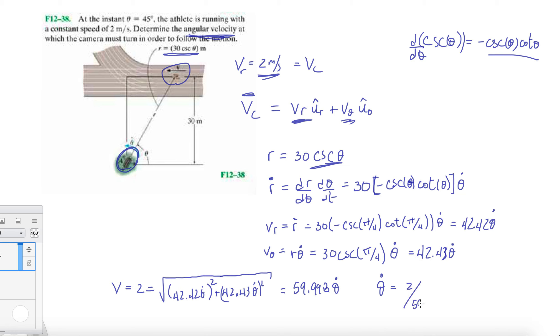Remember, theta dot and theta double dot I always express in radians per second and radians per second squared respectively, versus r dot and r double dot which are expressed in meters per second or feet per second, and meters per second squared or feet per second squared.